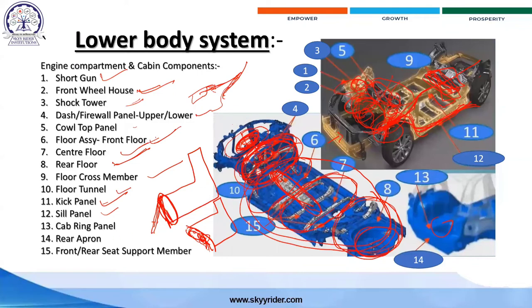The rear apron is where the exhaust pipe and ventral pipe are located — the ventral pipe takes the inner atmosphere of the vehicle outside for ventilation in the cabin floor. Front and rear seat support members are where the seats are mounted. The rear apron also contains the locking system for the tailgate, controlled both manually and electrically.